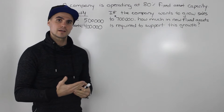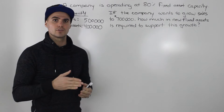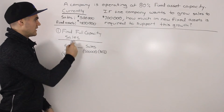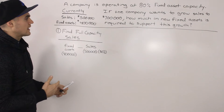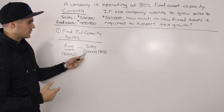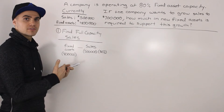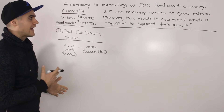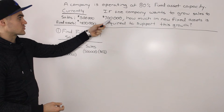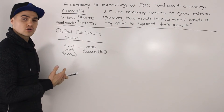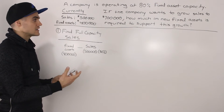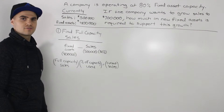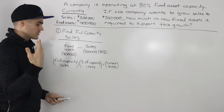This example is going to be a little bit more complex than the previous one, and I'm going to do it through a distinct series of steps. The first step is to find the full capacity sales, because right now our fixed assets are generating sales of $500,000 but they're only being used at 80%. So maybe we don't even have to buy any new fixed assets to get to the growth of $700,000. We need to find the full capacity sales first to see whether we actually need to purchase any new fixed assets.